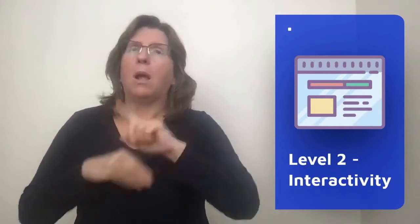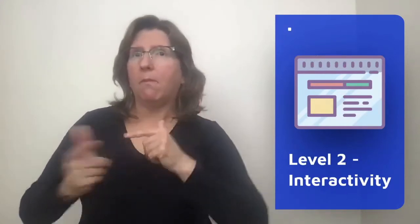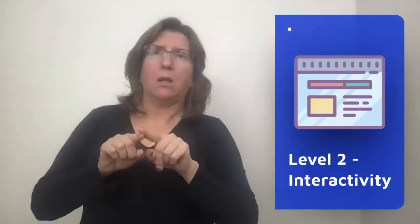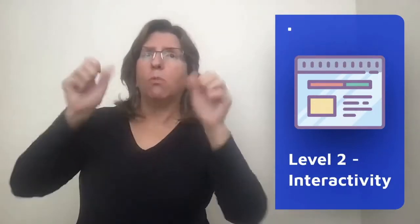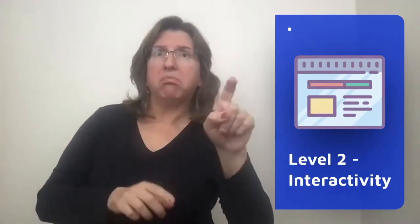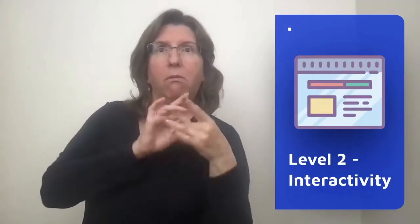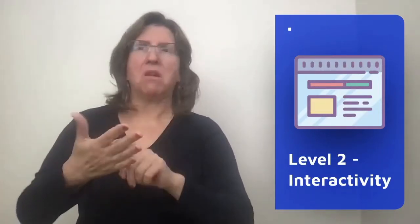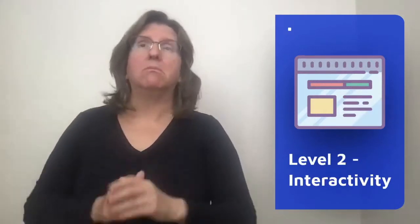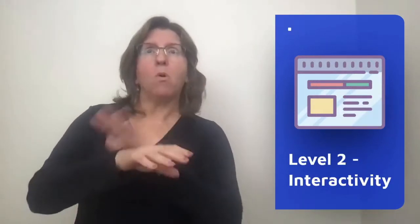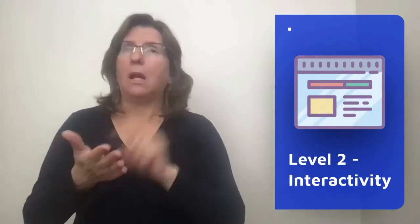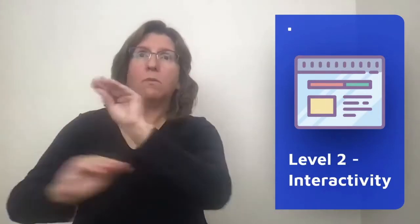Level 2 accessibility refers to the interactivity between the student and the digital material. Is the lesson designed to have the student interact or respond? Is the lesson designed to do something on the computer? Examples include responding to questions on a quiz, clicking an icon to start a movie, or moving graphics around on the screen.